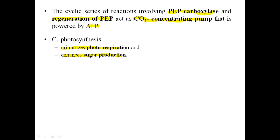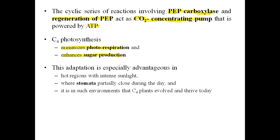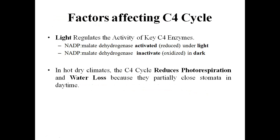C4 plants have evolved to convert carbon dioxide into a four-carbon compound first, and the C4 acid cycle helps in higher sugar production. This adaptation is especially beneficial for plants growing in hot regions with intense sunlight, where plants partially close their stomata during the day. C4 plants have evolved and are surviving and flourishing very well today.